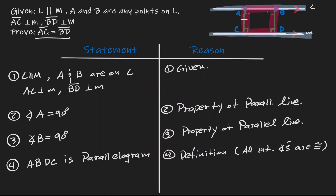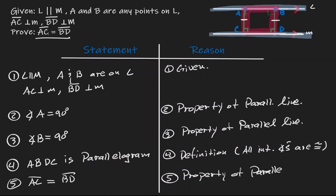Notice that that's what we wanted to show. We can claim lastly that AC is equal to BD, and the reason is nothing more than a property of parallelograms. We have just shown that if we have two parallel lines, then they will always be equidistant to each other.